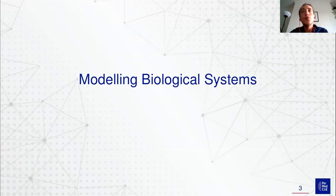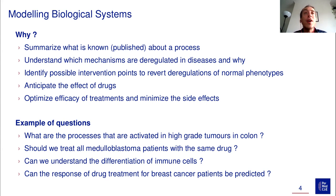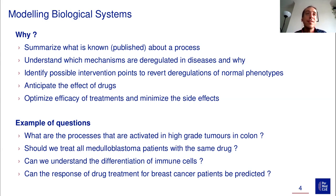Why do we want to model biological systems? The first idea is to summarize what is known and published about a process, but also to understand which mechanisms are specifically deregulated in disease and why, or in the case of drug treatment, what exact mechanisms are impacted. It's also to be able to identify possible points of intervention to take disease phenotypes and revert them back to normal phenotypes.